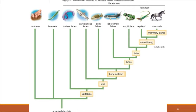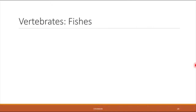The vertebrate chordates are the group we're most familiar with when we think about animals — this includes fishes, amphibians, reptiles, and mammals. We're going to focus on the vertebrate chordates and take a closer look at these groups, starting with fishes.